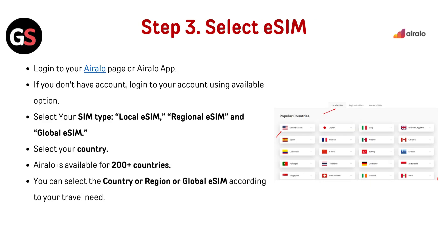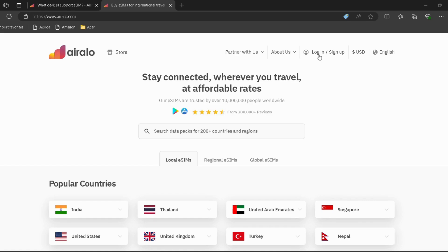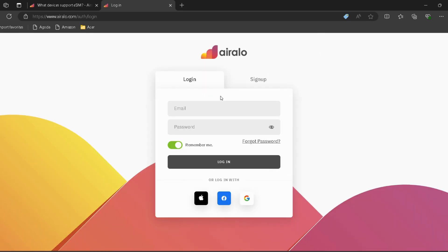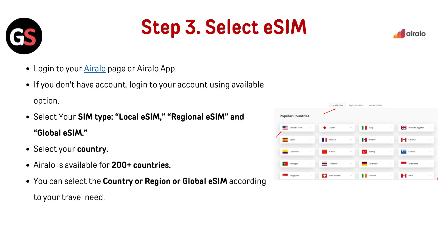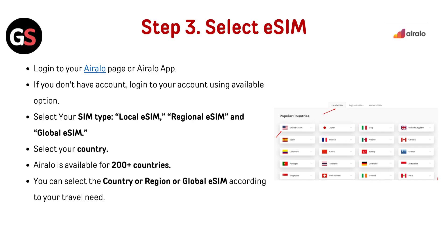Step 3 — Select eSIM: Login to your AirLo page or AirLo app — I have provided the link in the description. If you don't have an account, log in using an available option. Select your SIM type: local SIM, regional SIM, or global SIM. Then select your country. AirLo is available for 200+ countries, so you can select a country, region, or global eSIM according to your travel needs.